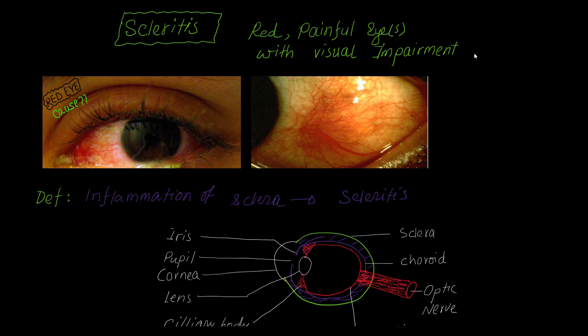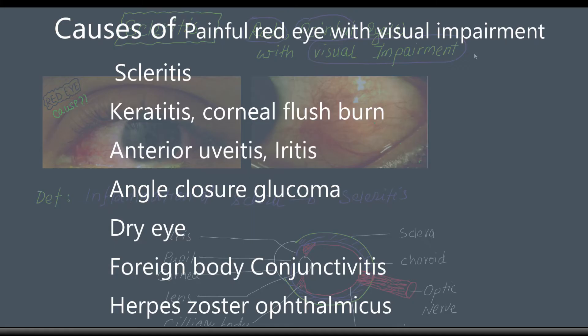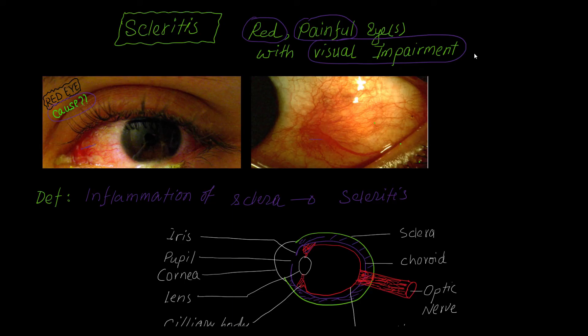Hello, today I am going to talk on scleritis. Think a patient came to you with red, painful eye, maybe unilateral or bilateral, with some sort of visual impairment like dimness of vision or blurring of vision, or maybe total blindness. What will you think? Red eye — very important. So at first you have to think of some sort of cause. There are so many causes shown on the screen. The important cause among them is scleritis.